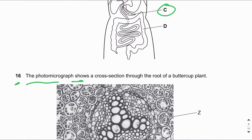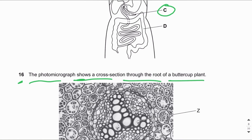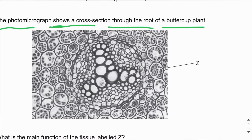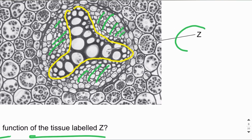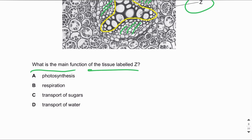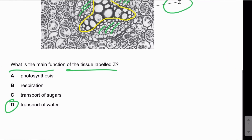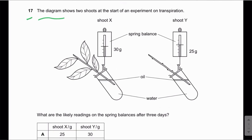MCQ number sixteen: The photomicrograph shows a cross section through the root of a buttercup plant. We can recognise it as a root section because the xylem tissue is in the centre forming an X shape, with phloem surrounding it — that is the characteristic feature of a root. The tissue labelled Z is the xylem vessel, and the function of xylem tissue is the transport of water and mineral ions. The answer is D.